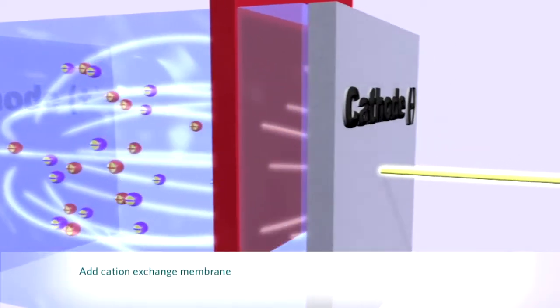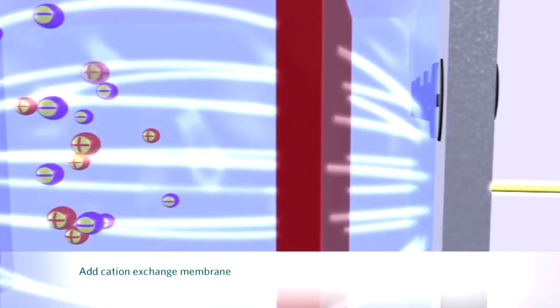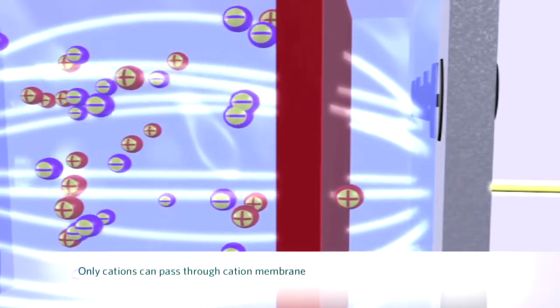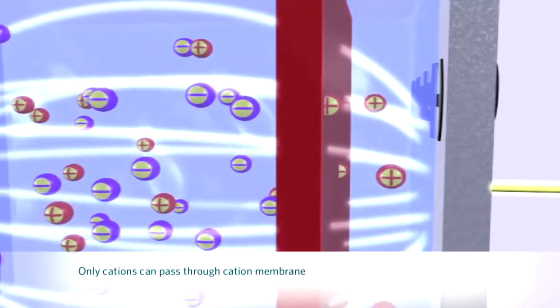When we insert an ion exchange membrane made of cation-selective resins, it will block the flow of anions and water molecules. Only cations will be able to pass through to the other side.